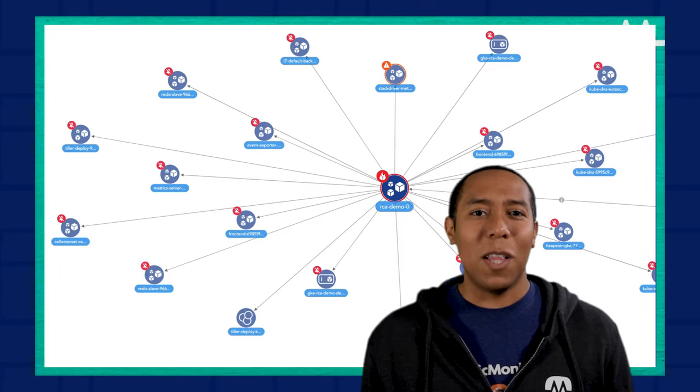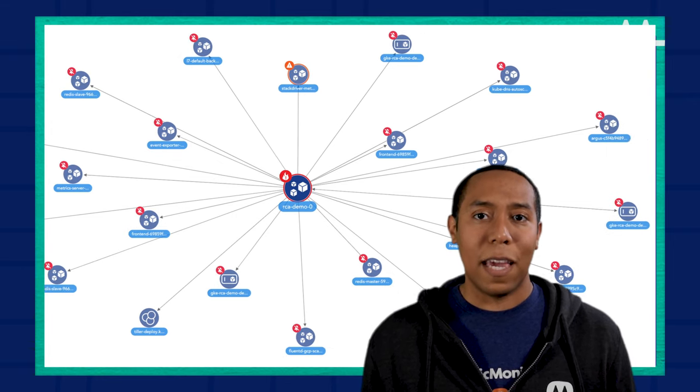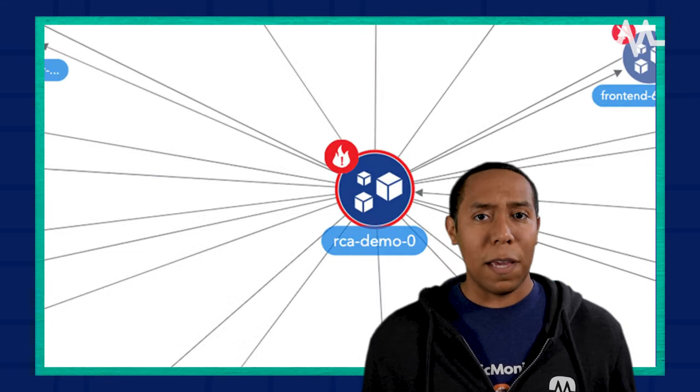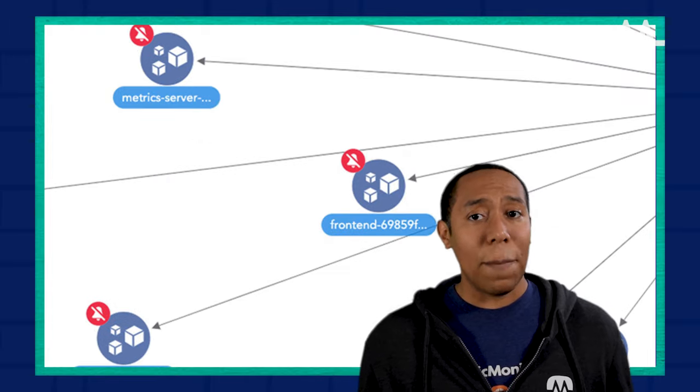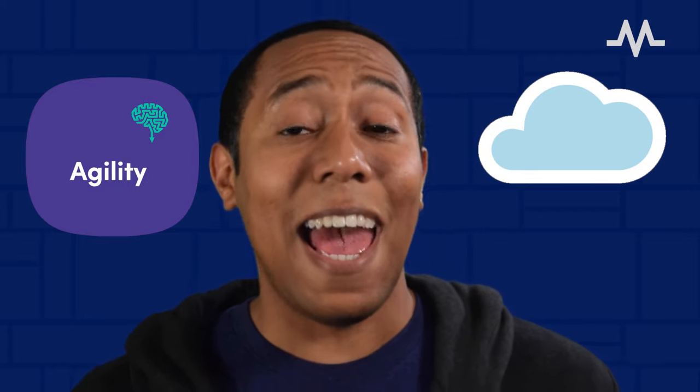Whatever AIOps solution you select, it should not only be powerful, but it should also be relatively easy to set up and use through an intuitive interface out of the box. AIOps is all about having a bird's eye view of your entire IT landscape and seeing the big picture contextually, no matter the resource or application type or location. With an AIOps solution that is rooted in the cloud, you can ensure flexibility, agility, and scalability within your IT operations.